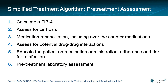For patients who qualify for the simplified treatment algorithm, the AASLD and IDSA Guidance recommends first calculating a FIB-4. A patient is presumed to have cirrhosis if their FIB-4 score is greater than 3.25, or if they have a prior fibroscan stiffness of greater than 12.5 kilopascals, other non-invasive serologic tests above published proprietary cutoffs, clinical evidence of cirrhosis based on imaging, laboratory evaluation, or exam, or a prior liver biopsy confirming cirrhosis.